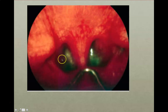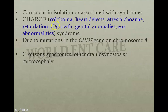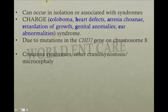This is a picture showing bilateral choanal atresia where the choana is blocked on both sides. Choanal atresia is associated with various syndromes, most commonly CHARGE syndrome. C stands for coloboma, H for heart defects, A for atresia choana, R for retardation of growth, G for genital anomalies, and E for ear abnormalities. This syndrome is due to mutation of the CHD7 gene on chromosome 8.